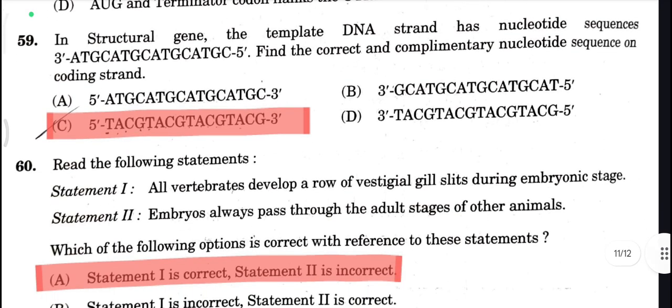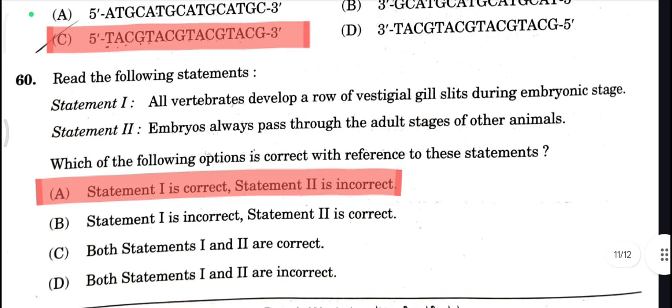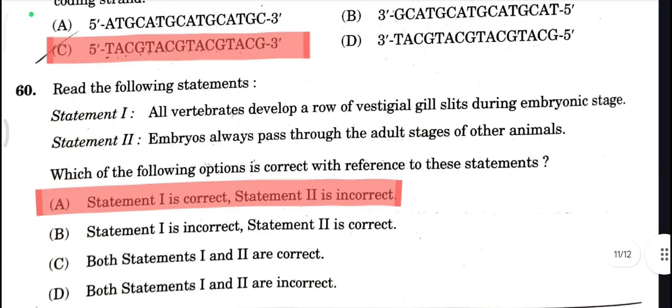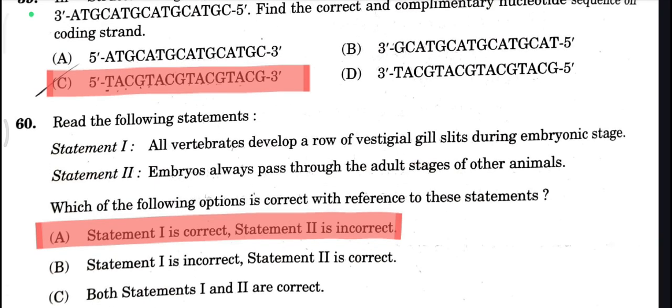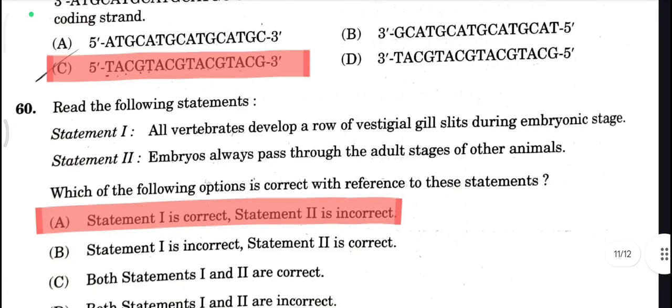C is your correct answer. Questions 59 and 60: A is your correct answer. Statement 1 is correct, Statement 2 is incorrect. All vertebrates develop a row of vestigial gill slits during embryonic stage — that is correct. But Statement 2 is incorrect, so option A is your correct answer.